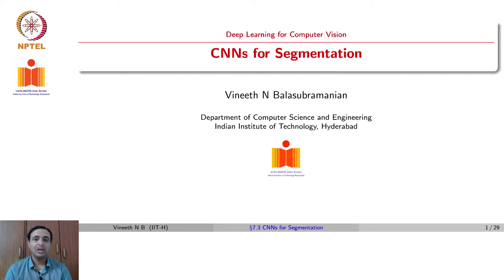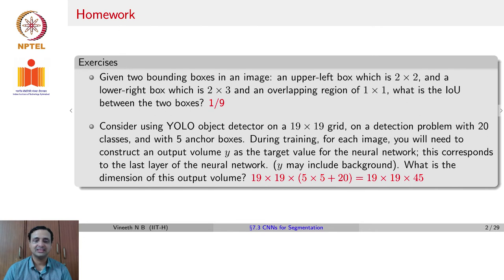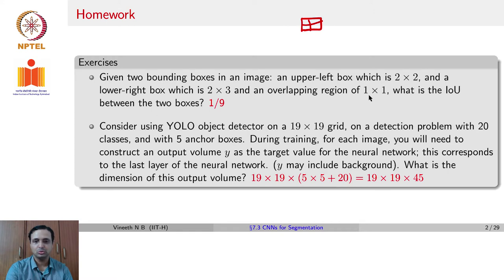Having seen detection, we will now move on to segmentation of images using CNN architectures. We will quickly review the exercise from the previous lecture: given two bounding boxes — an upper left box which is 2x2 and a lower right box which is 2x3 with an overlapping region of 1x1, what is the IOU? The total number of boxes is 9, of which the intersection is 1 box, so the overall IOU would be 1/9.